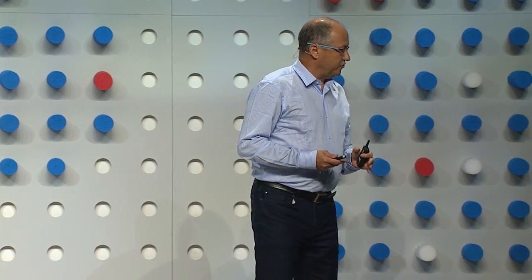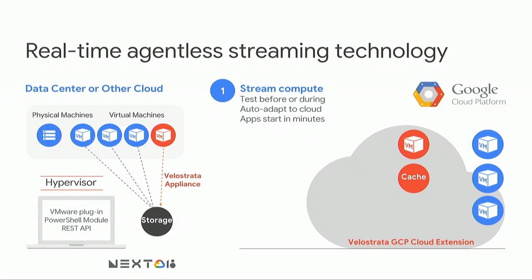The solution starts with deploying a virtual appliance in the source data center or cloud. Then there's automatic, on-demand, scale-up deployment of one or more cloud extensions in the cloud regions of your choice. After a one-time setup — VPN, VPC — you're ready to start migration. Using the plugin into the VMware vCenter management console, a user can pick one or more VMs or a whole application and say 'I want to run in the cloud.' The backend appliance takes control of the VM, shuts it down gracefully, takes control of its disk, and starts the boot process in the cloud via a data channel with the cloud extension, which creates a virtual disk corresponding to the remote storage.